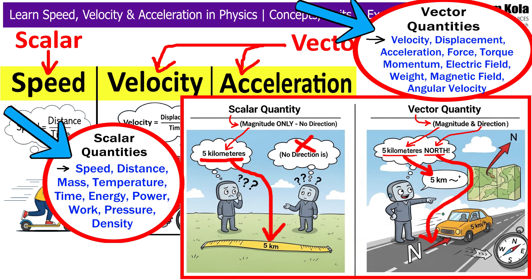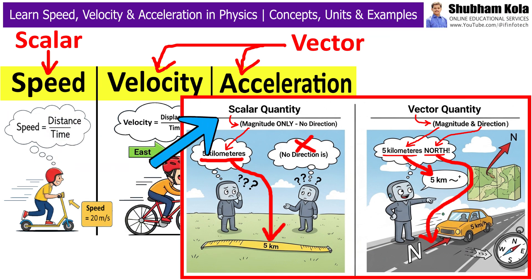In physics, every measurement we take can be one of these two types. A scalar quantity is something that only has magnitude. In simple words, just a size or amount but no direction.